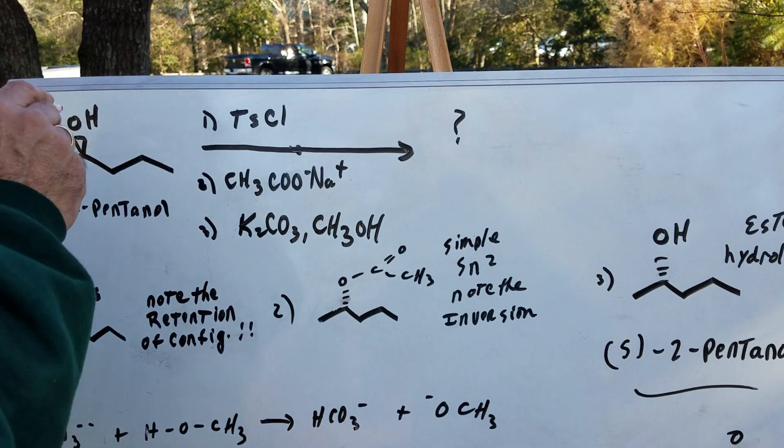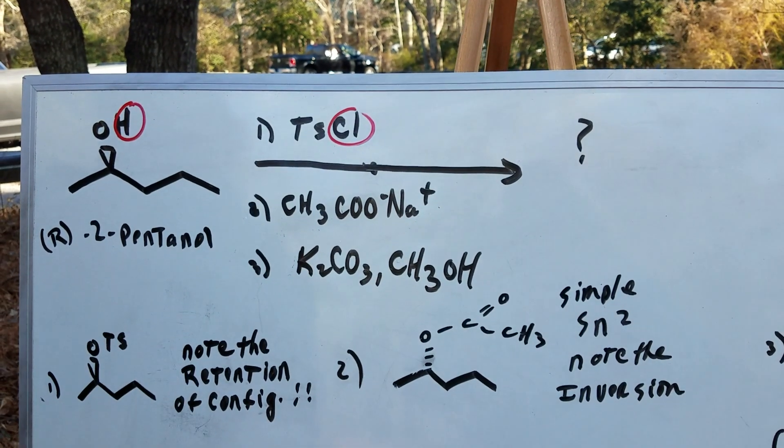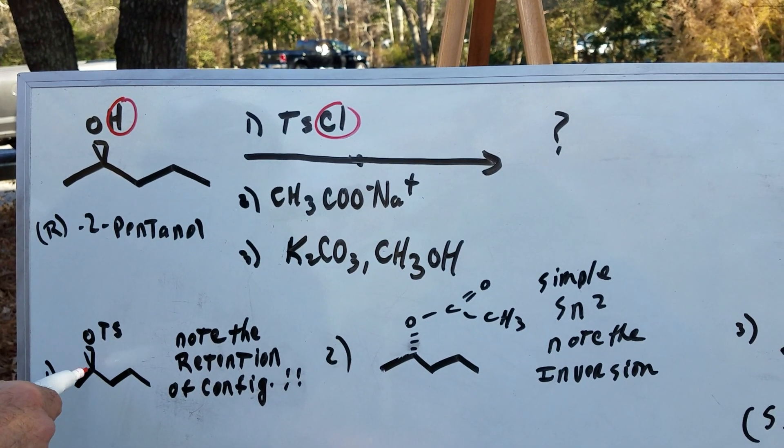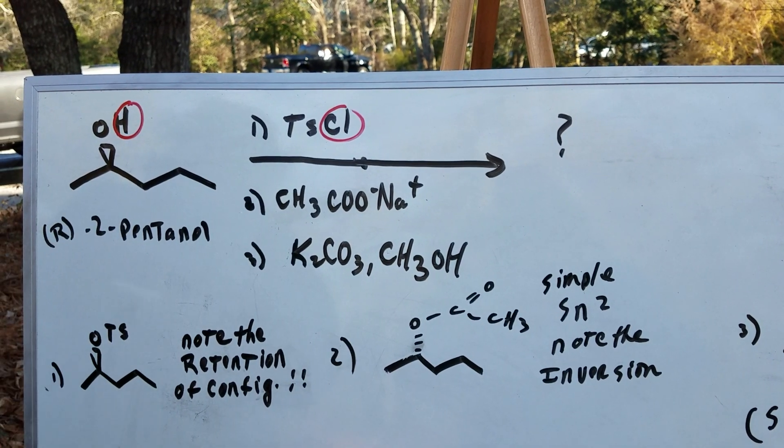Now, the first step is pretty straightforward. We're going to simply split off an H and a Cl and you get the tosylate. Note the retention of configuration because you're not breaking a bond in the chiral carbon. So you keep the stereochemical designator as such.